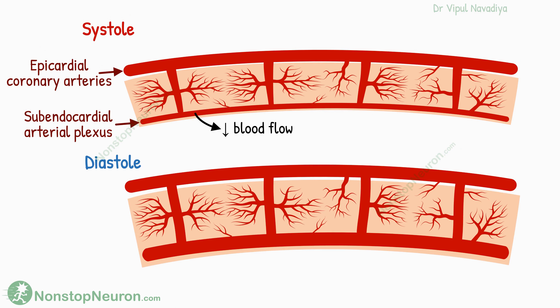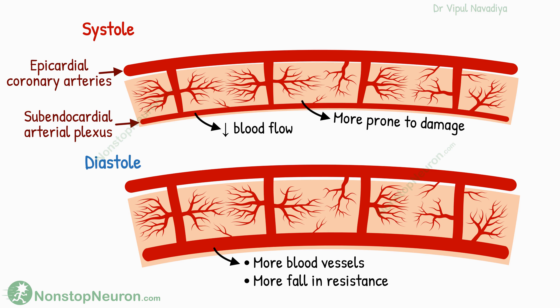However, in a healthy person, this is compensated by more vessels near the endocardium and also by more fall in resistance during diastole. So normally, the total blood flow in the outer and inner half is almost equal. However, in pathological conditions, the endocardium is more prone to damage for this reason.